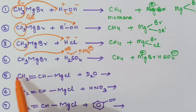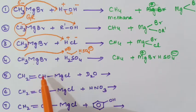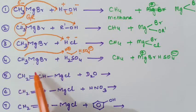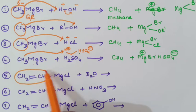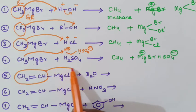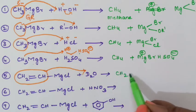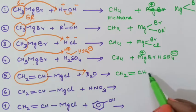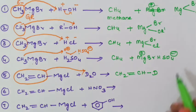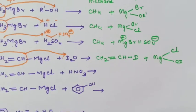In the next example, we have a Grignard reagent in which the alkyl group has a double bond. This part will have a partial negative charge. It is reacting with D2O — deuterium oxide, which is similar to water but with D instead of H. The carbanion will abstract one D plus ion. As a result, the product will be CH2=CH-CH2D, and the other product will be MgCl(OD).